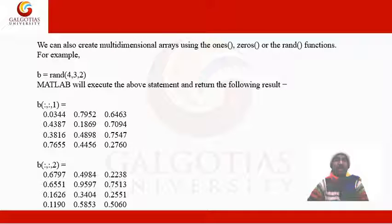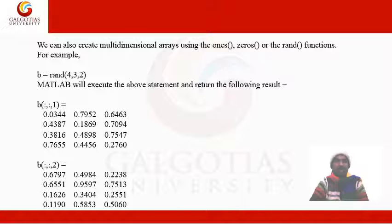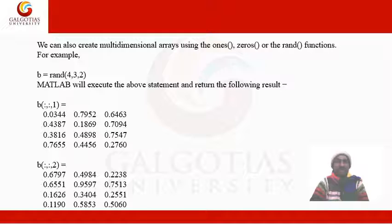We can also create multi-dimensional arrays using the ones(), zeros(), or rand() functions. For example, rand(4,3,2) produces a multi-dimensional array with random values between zero and one.